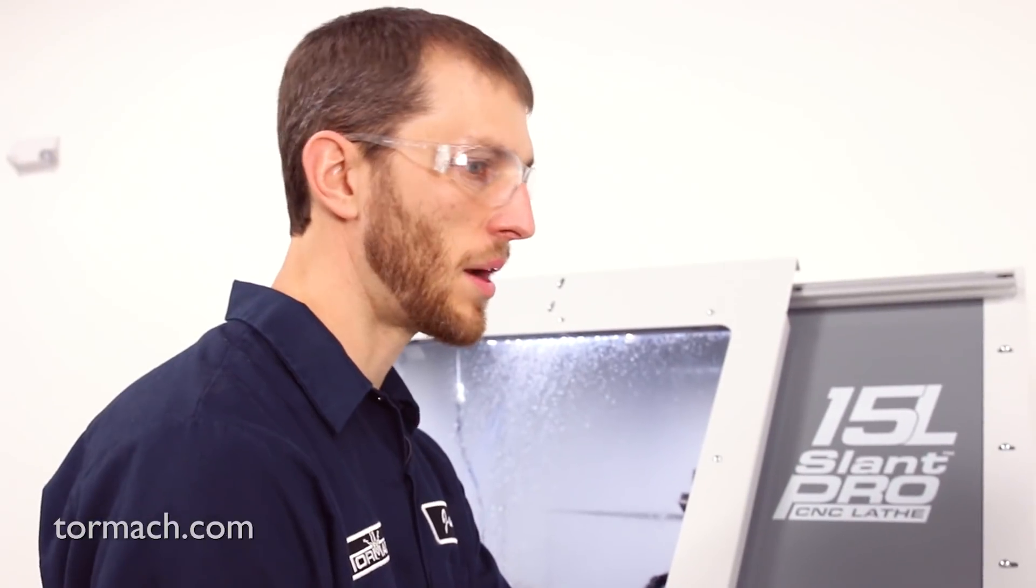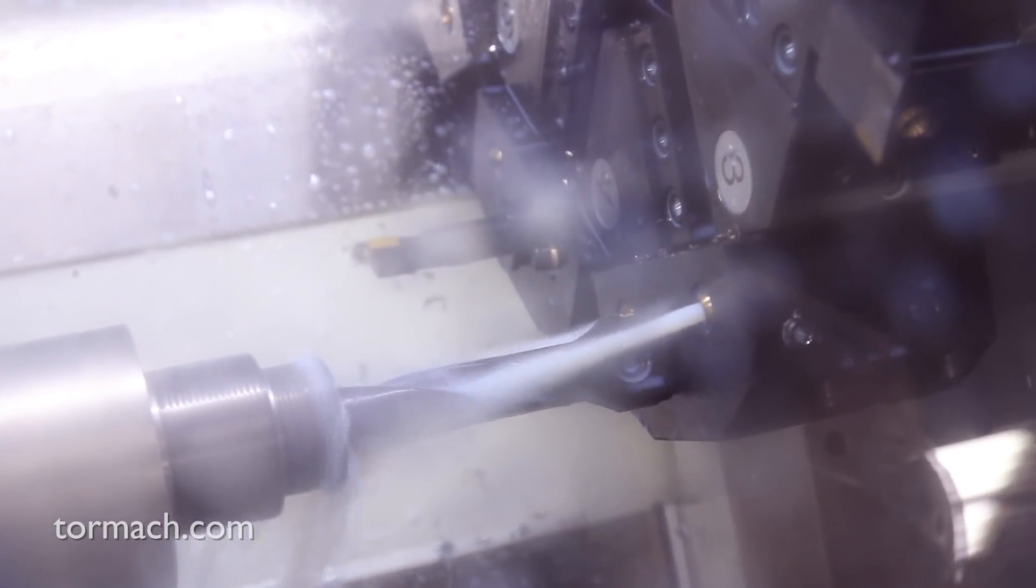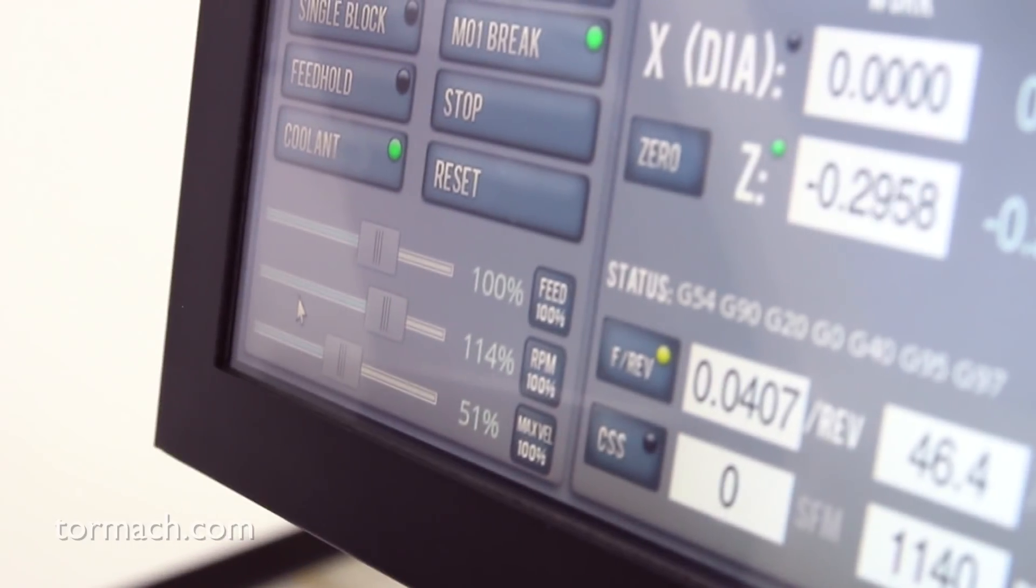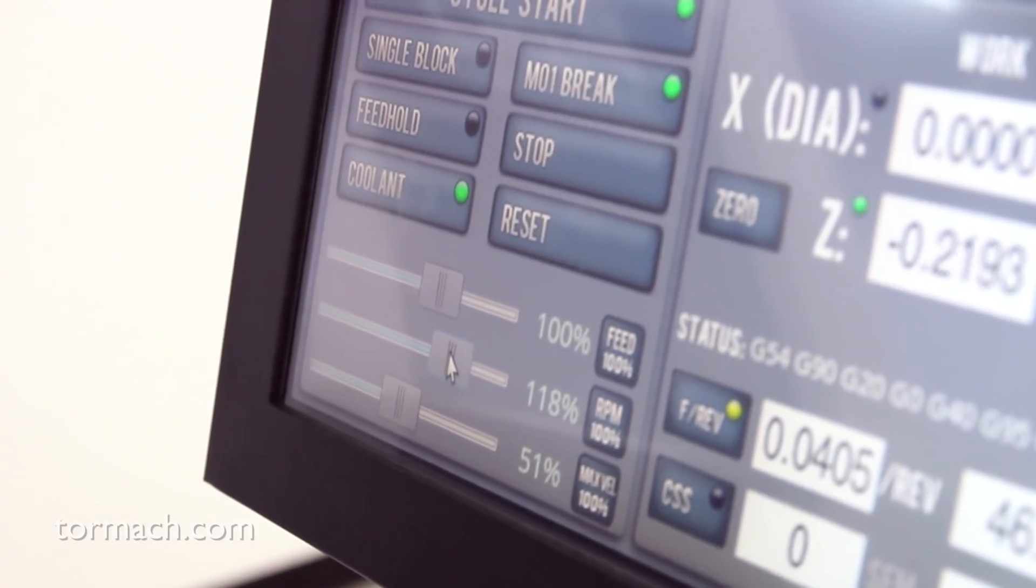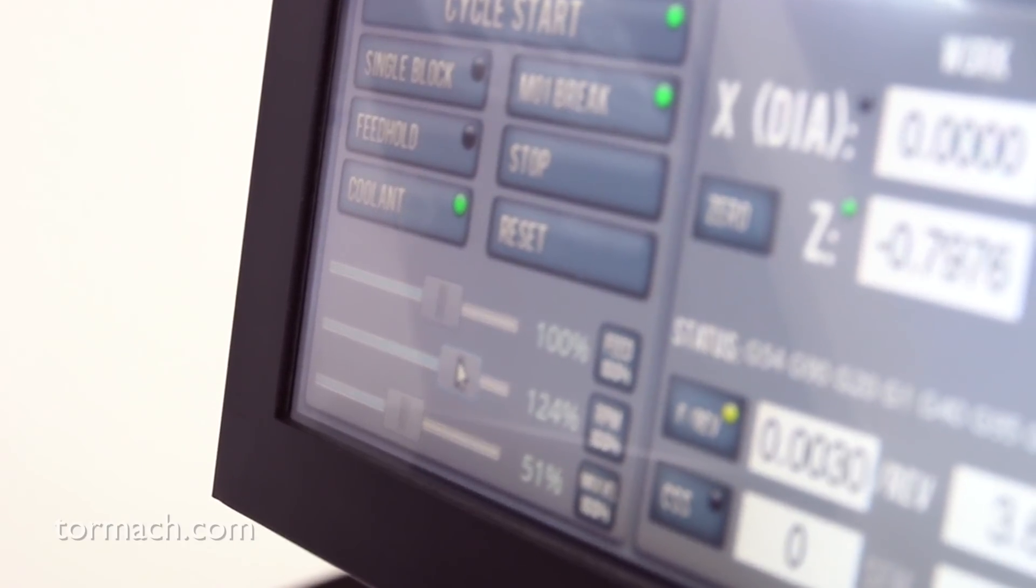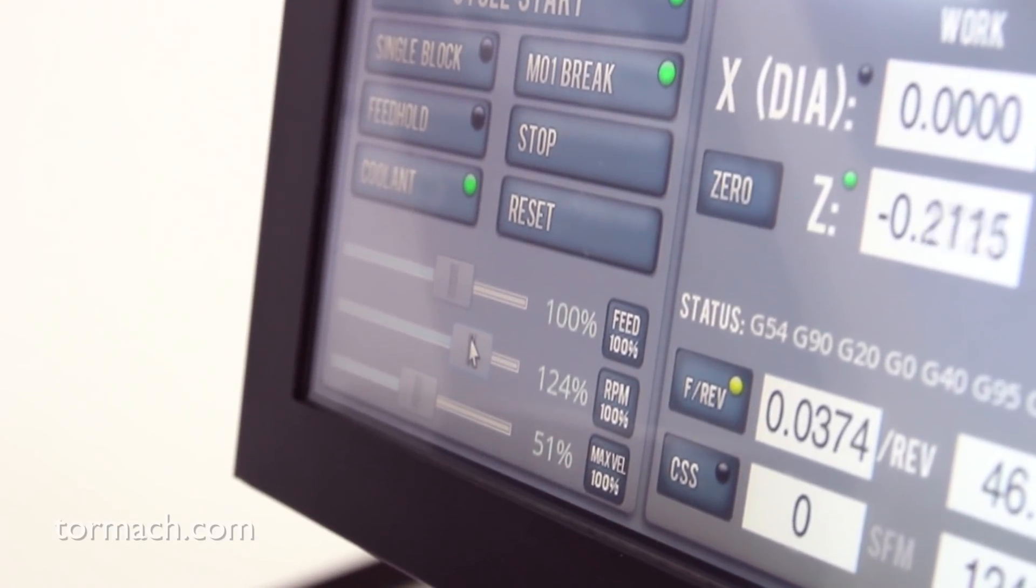So I got 3 thou per rev, which should be a pretty conservative feed rate. Here I am playing with the feed override. It was a pretty hard loading sound. I'm just bumping the spindle speed up a little bit. I don't want to take my chip load down and rub the component or cause it to work harden, so it's sounding better there.